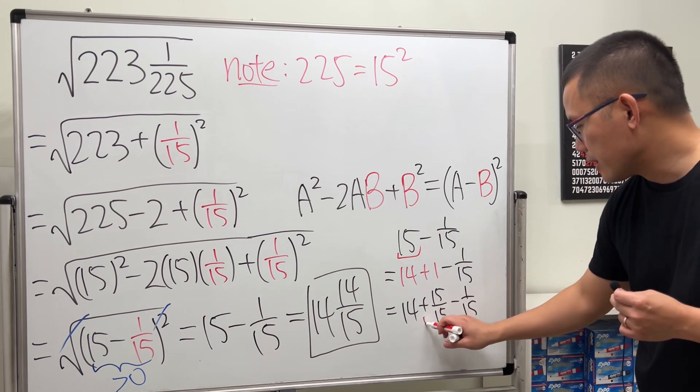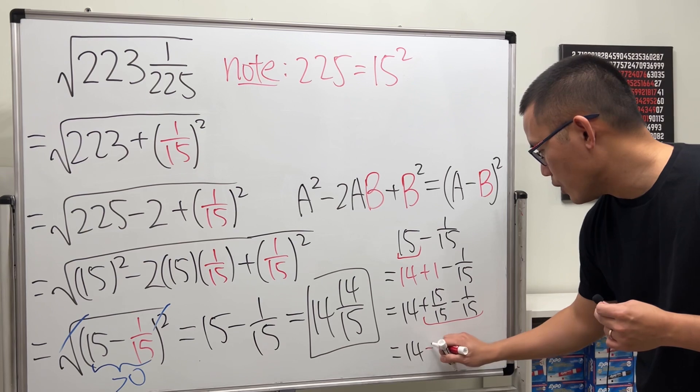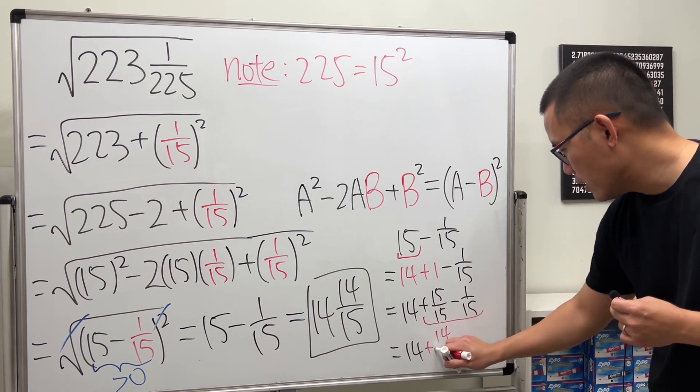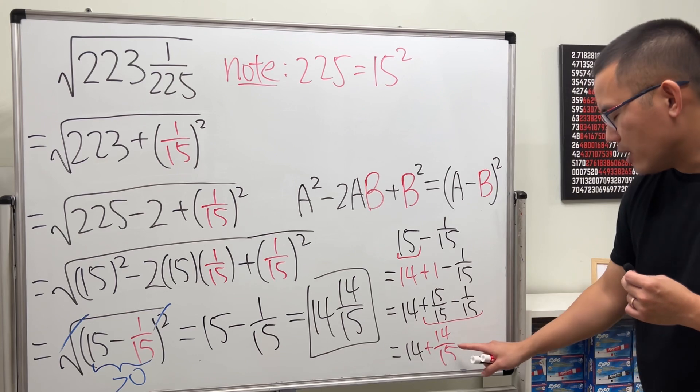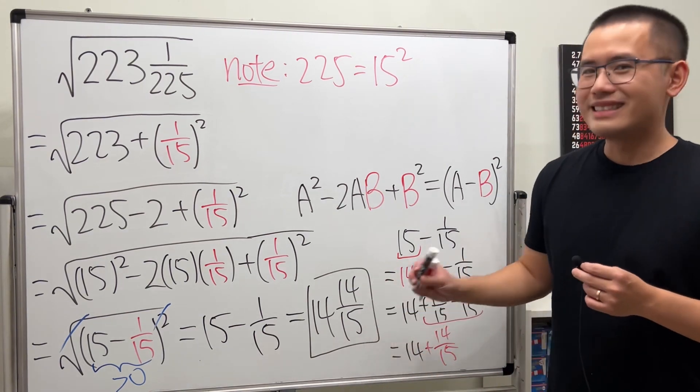And then, these two together is 14 over 15. 14 plus 14 over 15 is exactly that. So, that's it.